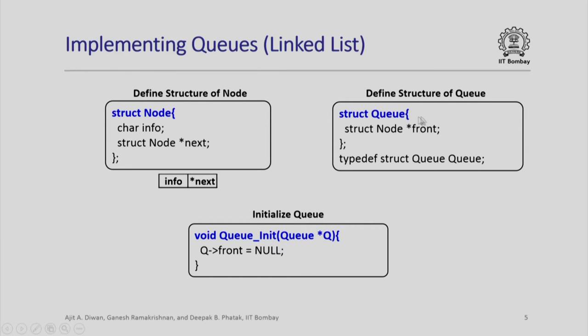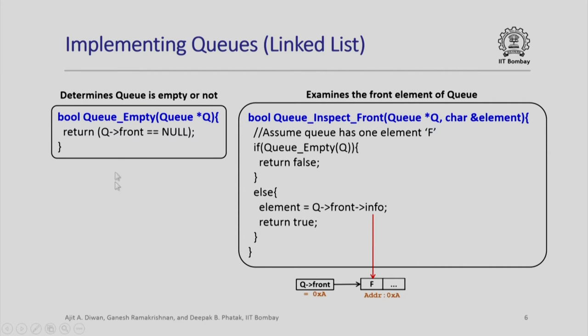The queue itself is defined as a linked list of these nodes. Initialization of the queue is very simple - we simply set front to null, that means queue has nobody. To determine whether queue is empty or not, again if queue front is null it is empty, otherwise it is not empty.